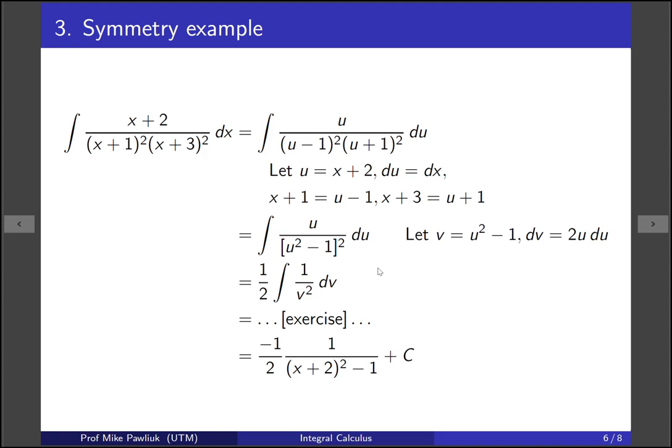So I'll leave the rest for you as an exercise about putting this back in terms of x but you can check your answer here. It's minus 1 half times 1 over x plus 2 squared minus 1 plus c.